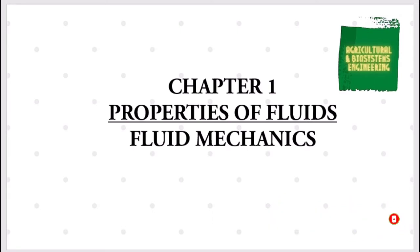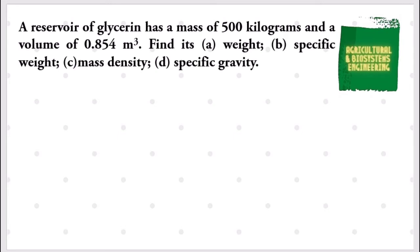This time, we will be solving this problem. A reservoir of glycerin has a mass of 500 kilograms and a volume of 0.854 cubic meters. Find its weight, second its specific weight, third its mass density, and finally its specific gravity.